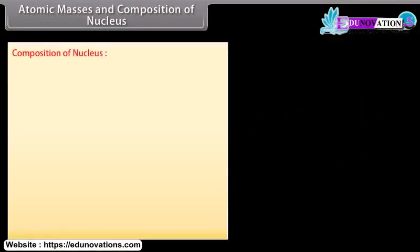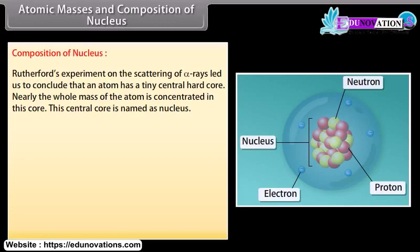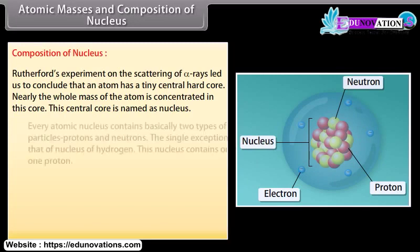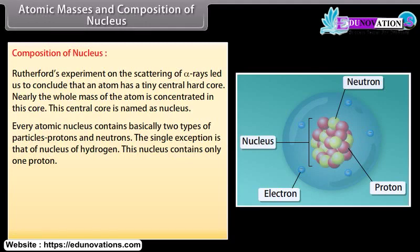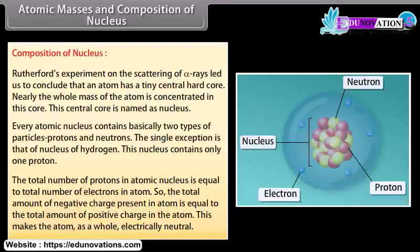Composition of nucleus: Rutherford's experiment on the scattering of alpha rays led us to conclude that an atom has a tiny central hard core. Nearly the whole mass of the atom is concentrated in this core, which is named as the nucleus. Every atomic nucleus contains basically two types of particles: protons and neutrons. The single exception is the nucleus of hydrogen, which contains only one proton. The total number of protons equals the total number of electrons, making the atom electrically neutral.